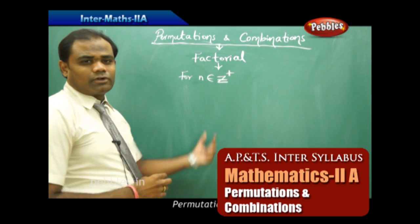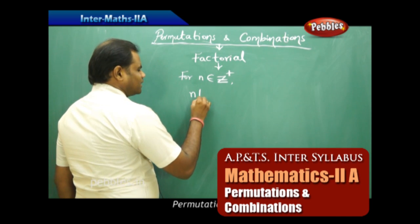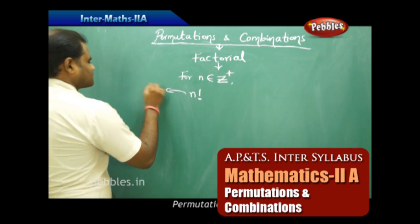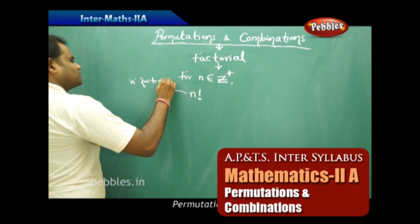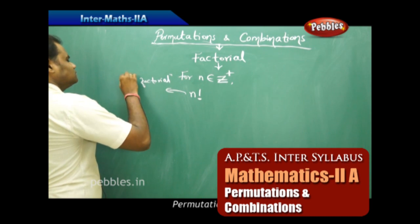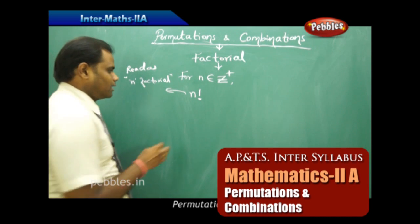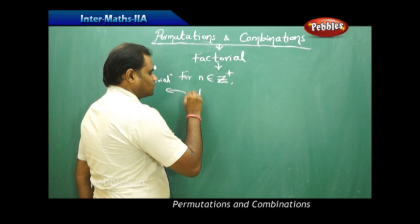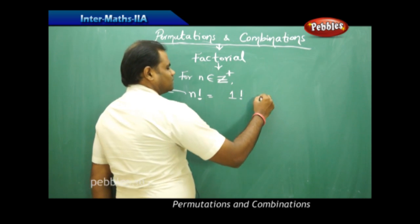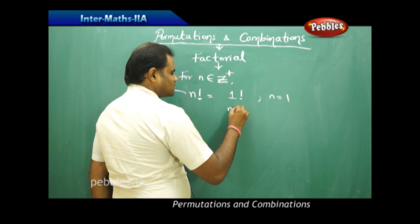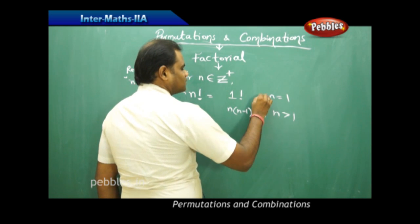Factorial is defined for a positive integer n, where we denote the factorial of n by n factorial, written as n with an exclamation mark, and read as 'n factorial.' It is defined as: 1 factorial equals 1 if n equals 1, and n factorial equals n times (n minus 1) factorial if n is greater than 1.